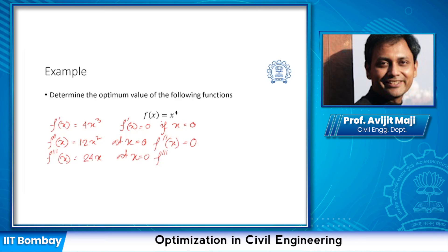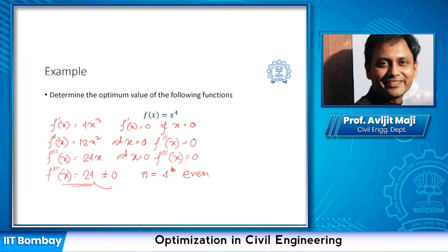The third order derivative is 24x, which at x = 0 is also zero — we still cannot decide. Moving to the fourth order derivative, we get 24, which is non-zero. Since n = 4 is even and the value 24 is positive, we can conclusively determine that x = 0 is a minimum point.